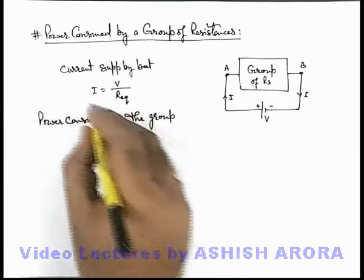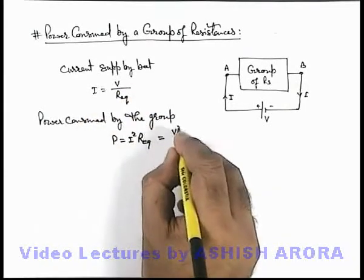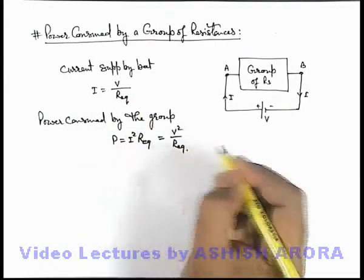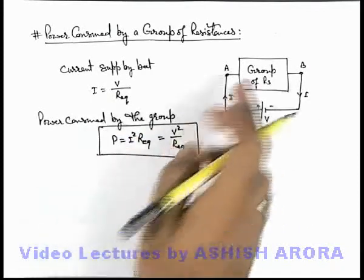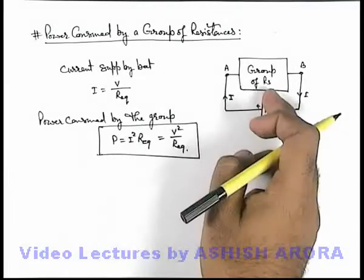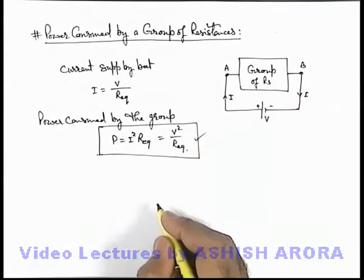In this situation if we substitute the value of I, this will be given as V squared by R eq. We can use either I squared R or V squared by R, a relation for a group of resistances, or even if there is a single resistance we can use this relation.